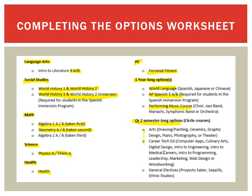For the two semester-long options, there are many classes to choose from, and you can find course descriptions on the Chief Sealth website. If a student is planning to take a full year of World Language and a full year of Performing Music, they would either postpone PE and Health to 10th grade, or take PE Health as a zero period in 9th grade. A zero period is a course offered before first period outside the regular school schedule.